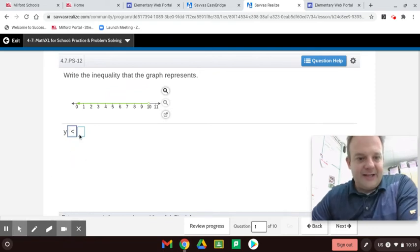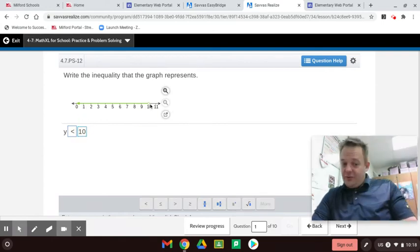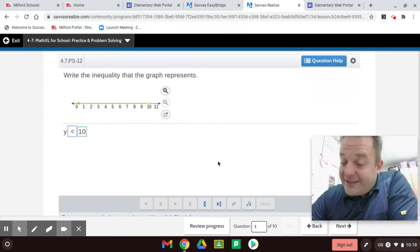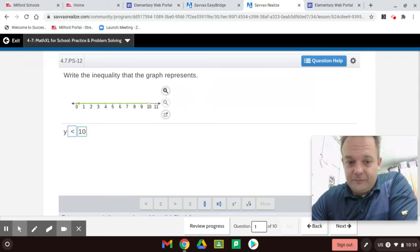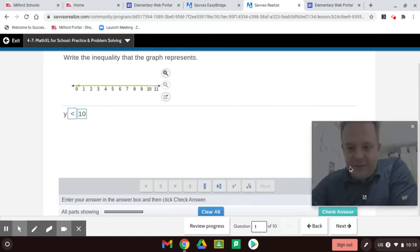Y is less than 10. So, any value less than 10, not including 10. Does it include 10? No. If it included 10, it would be less than or equal to, but it doesn't include 10. So, it's Y is less than 10. And we'll check to see if that's right.